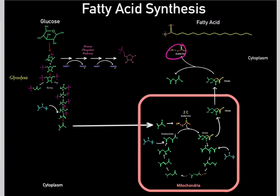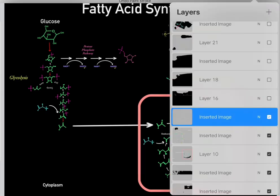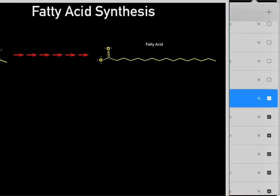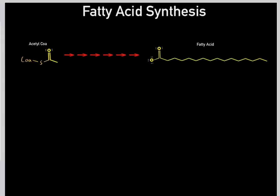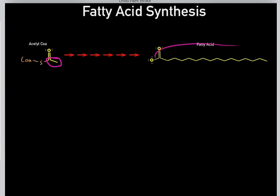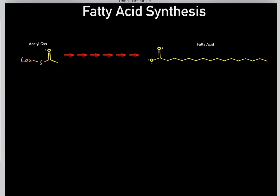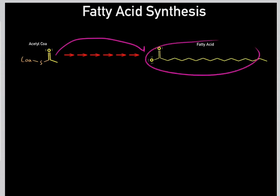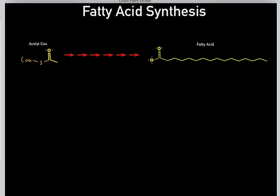So in principle, anything that can be converted to acetyl-CoA can use its carbons to biosynthesize free fatty acids. Once you form acetyl-CoA you enter the pathway of fatty acid synthesis. Now we know we can take these two carbons in acetyl-CoA and use them to biosynthesize free fatty acids — but how exactly do we do that?